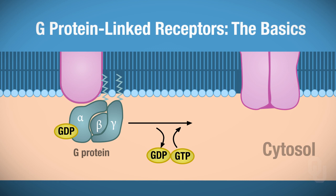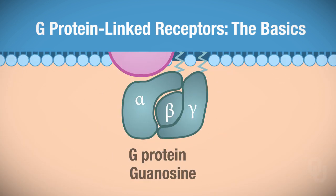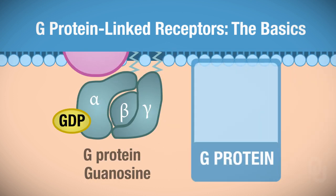First off, what does the G stand for? This G stands for guanosine, which is a nitrogenous base. Within the intracellular fluid—here's the ICF of this cell—you're looking at three subunits that make up the G-protein: alpha, beta, and gamma, as you can see there. Notice that you have a GDP—guanosine diphosphate—attached to the alpha subunit. That's a very important concept.